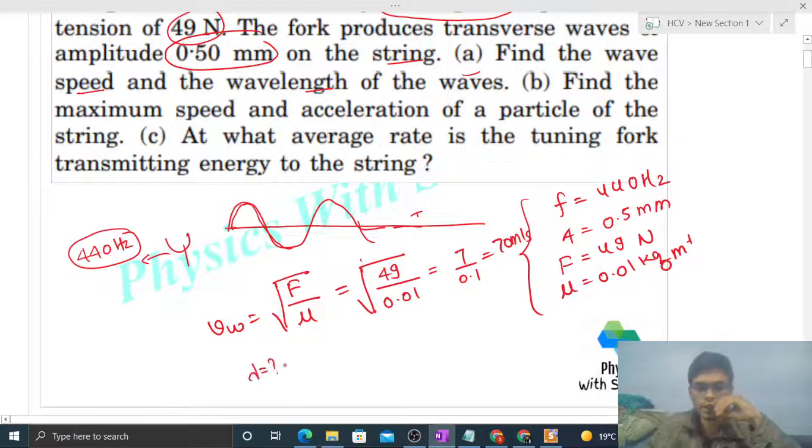Now we need to find the wavelength. Wave speed equals wavelength divided by time period, and 1/T is frequency. So wavelength λ = v/f. Putting the values: λ = 70/440 = 7/44 m.